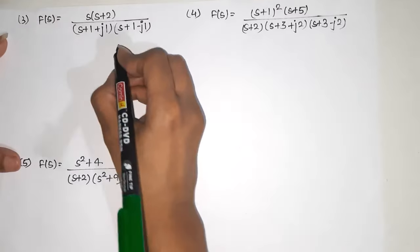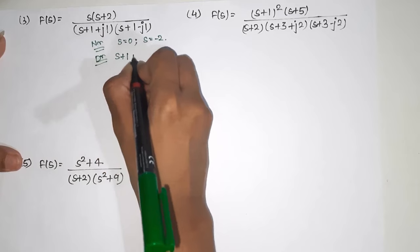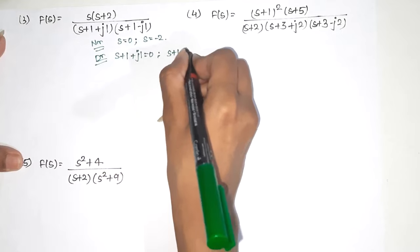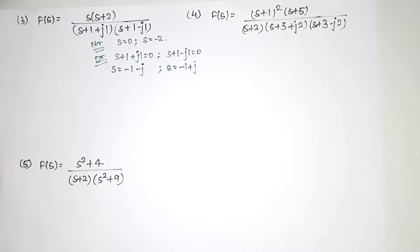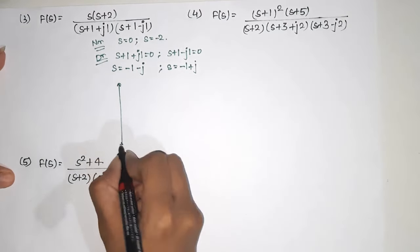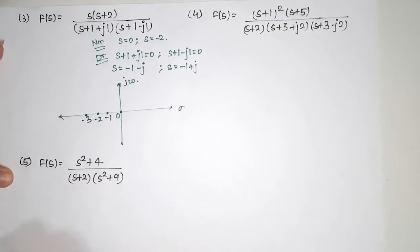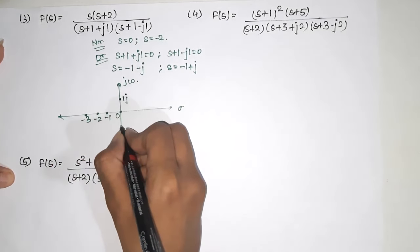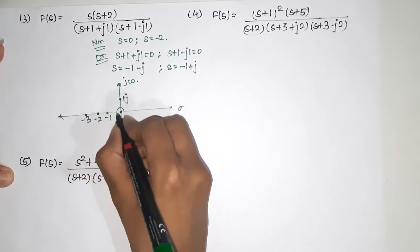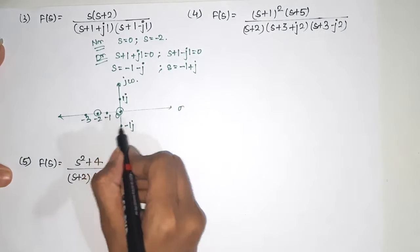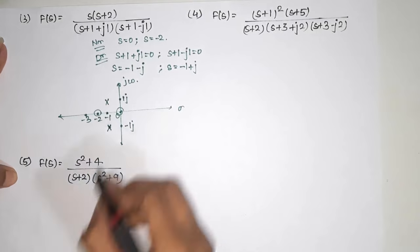Let us see a few more examples. In the numerator, zeros are at s = 0 and s = -2. In the denominator, (s+1+j1) = 0 gives s = -1-j, and (s+1-j1) = 0 gives s = -1+j. These are complex poles. On the plot with sigma and jω axes, zeros are marked at 0 and -2, and crosses at -1-j and -1+j.